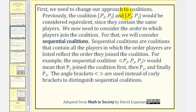First, we need to change our approach to coalitions. Previously, the coalitions containing players one and two and players two and one would be considered equivalent since they contain the same players. We now need to consider the order in which players join the coalition. For that, we will consider what are called sequential coalitions, where sequential coalitions are coalitions that contain all players in which the order players are listed reflects the order they join the coalition.